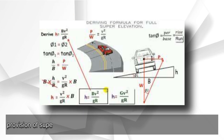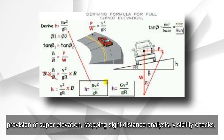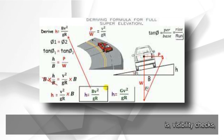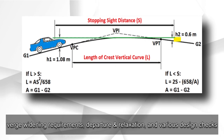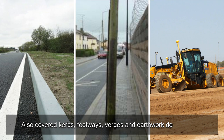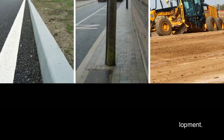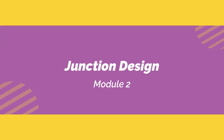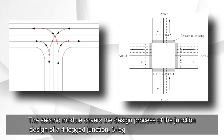Module 1 also covers horizontal alignment design, vertical profile design, provision of super elevation, stopping sight distance analysis, visibility checks, verge widening requirements, departure and relaxation, and various design checks. It also covers curbs, footways, verges, and earthwork development.